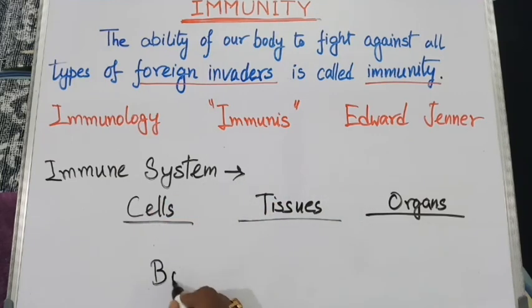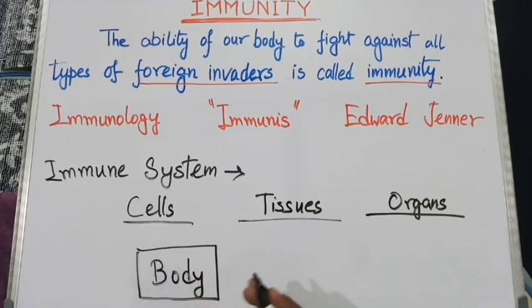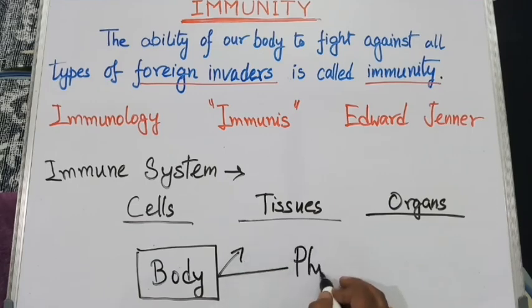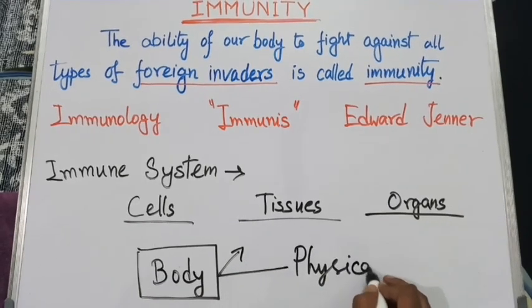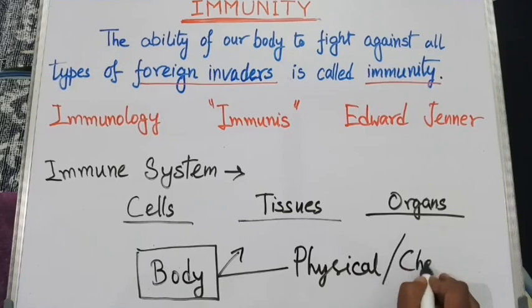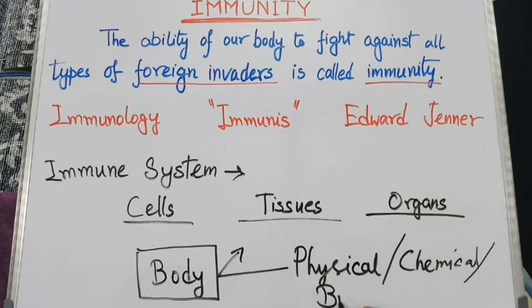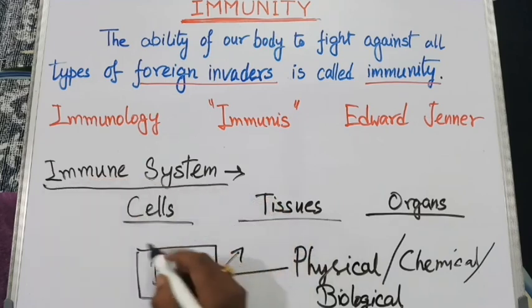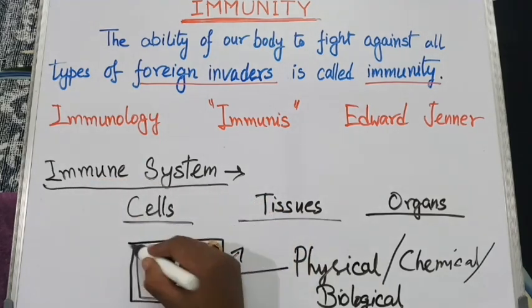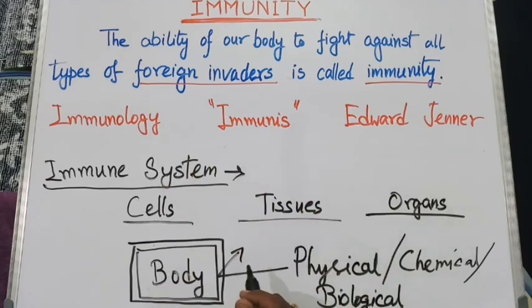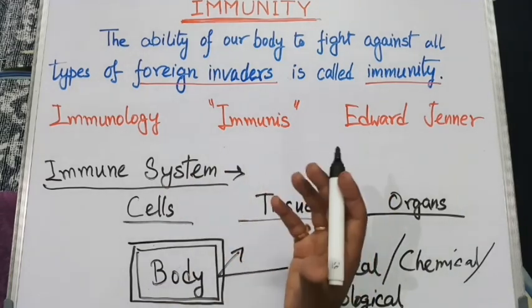The immune system provides our body a shield that actually helps protect it from different kinds of invaders — physical, chemical, or biological invaders. So the immune system forms a kind of shield for our body. Now let's discuss the different types of immune system in our body.